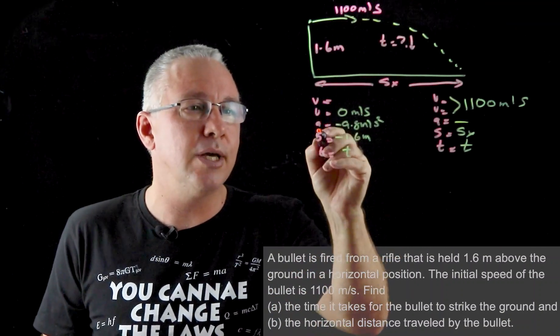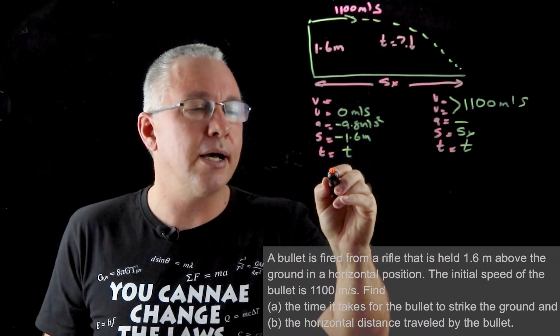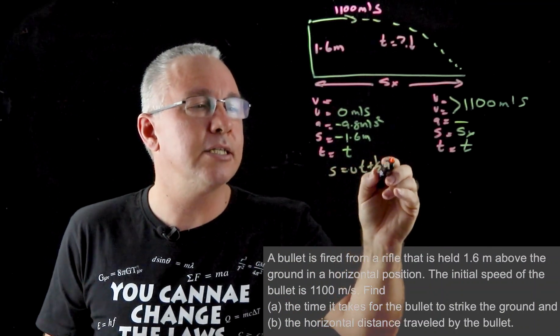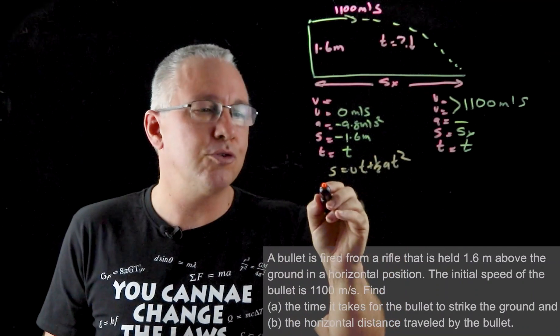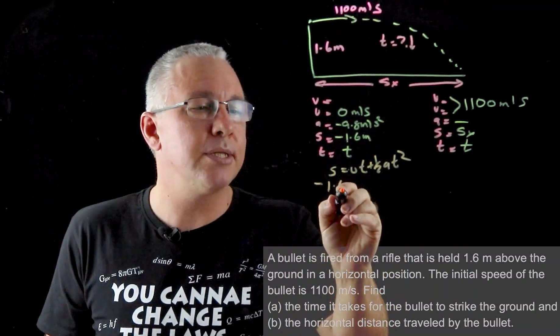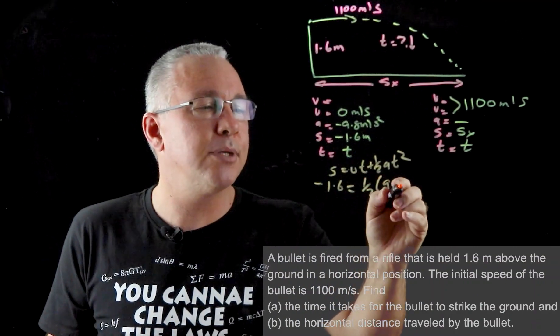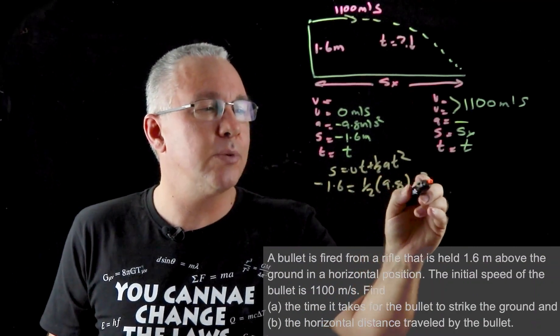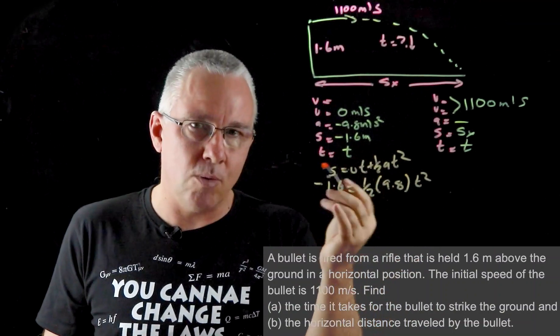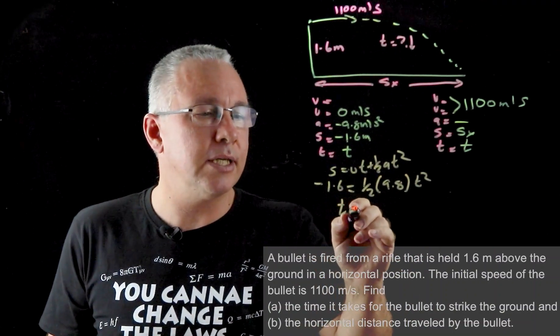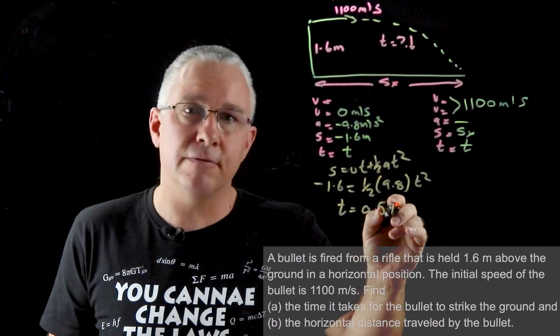In this case a, u, s, and t are given, so I have s is equal to ut plus a half a t squared is my formula. If I substitute everything in I get negative 1.6 is equal to, that zero so we leave it off, a half multiplied by 9.8 multiplied by my t squared. And if I rearrange that, I won't do the maths for you in terms of setting it out, you'll get a value equal to 0.571 seconds.